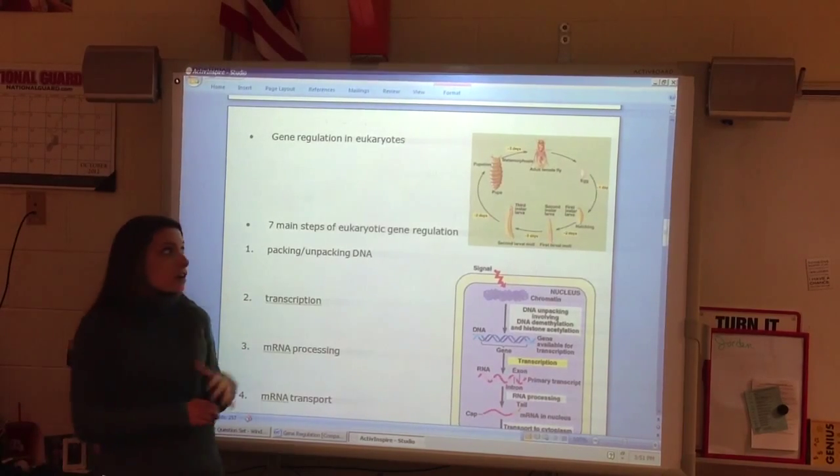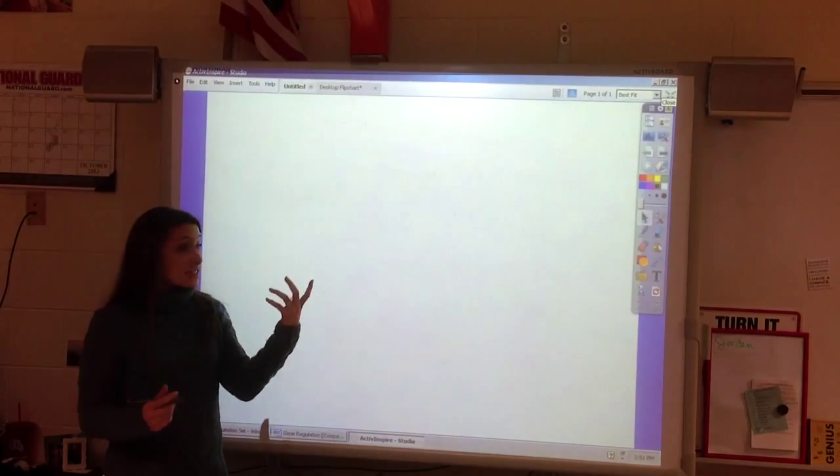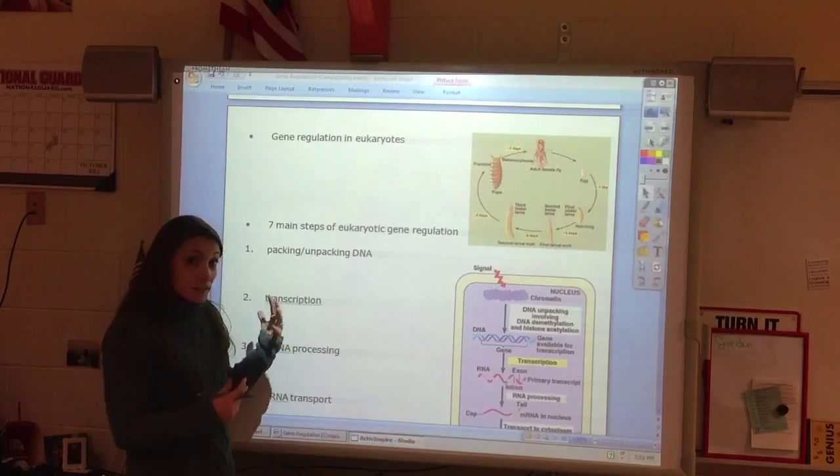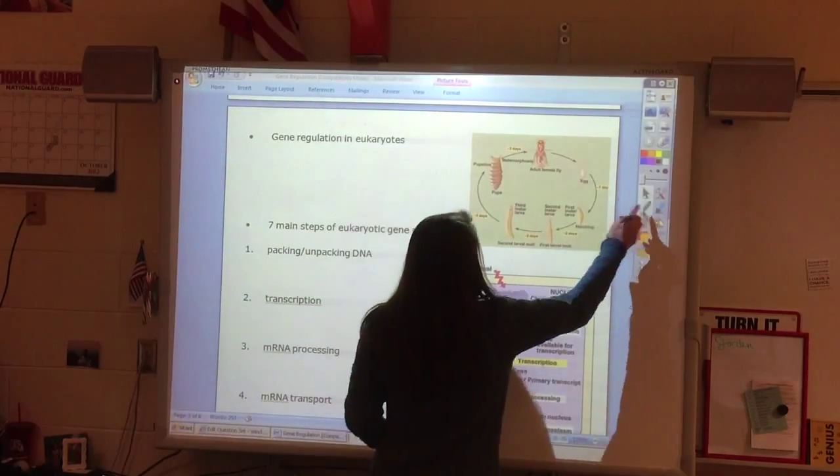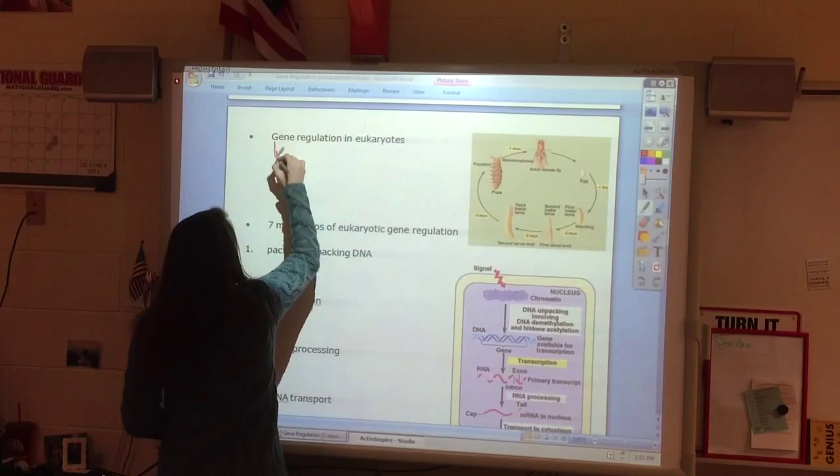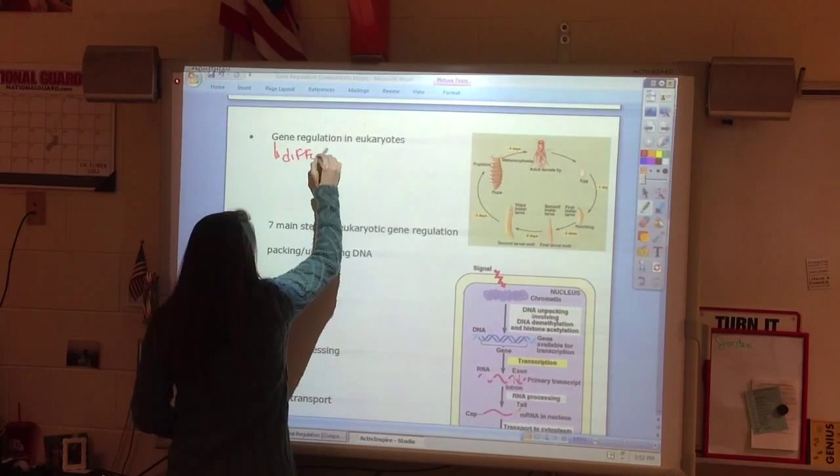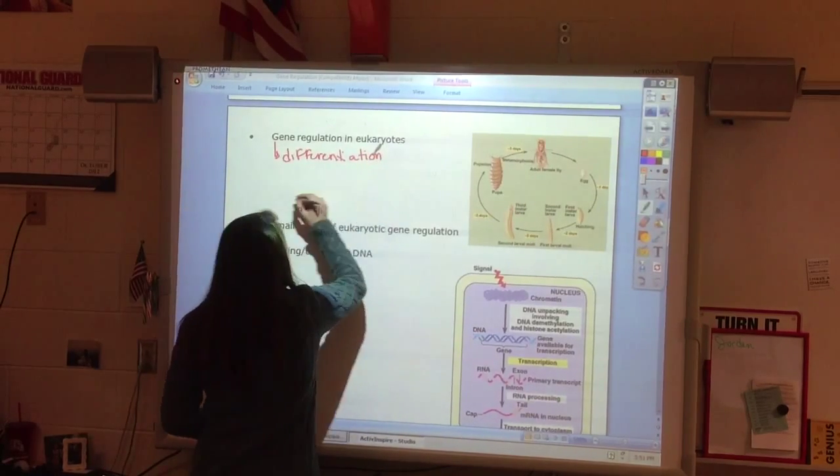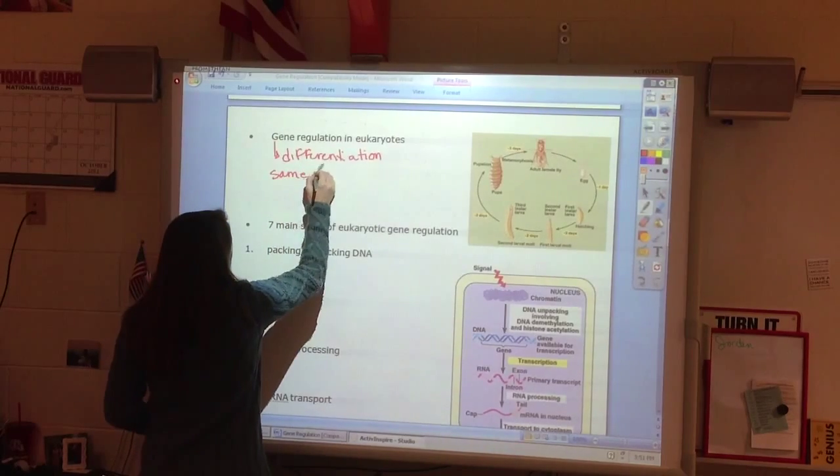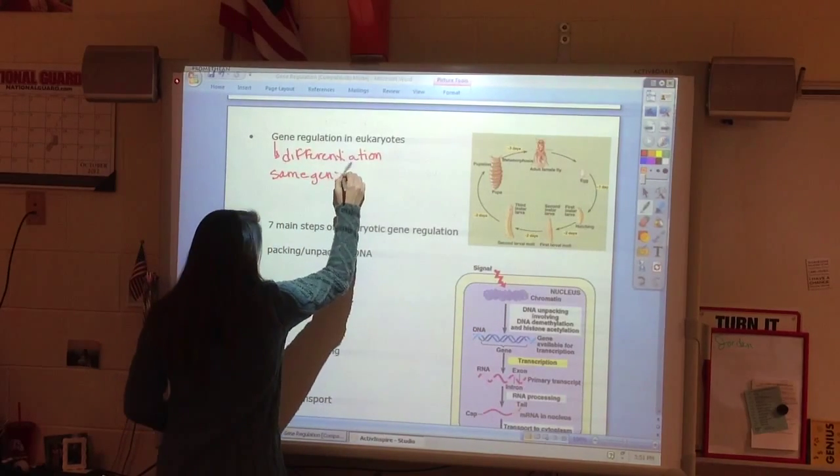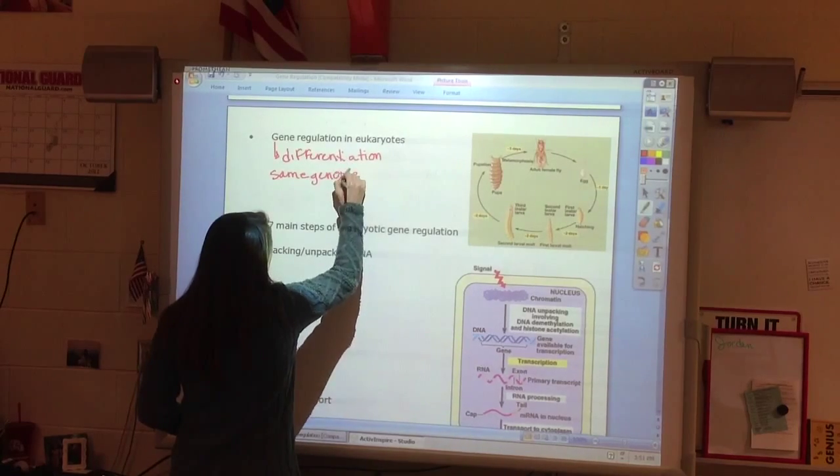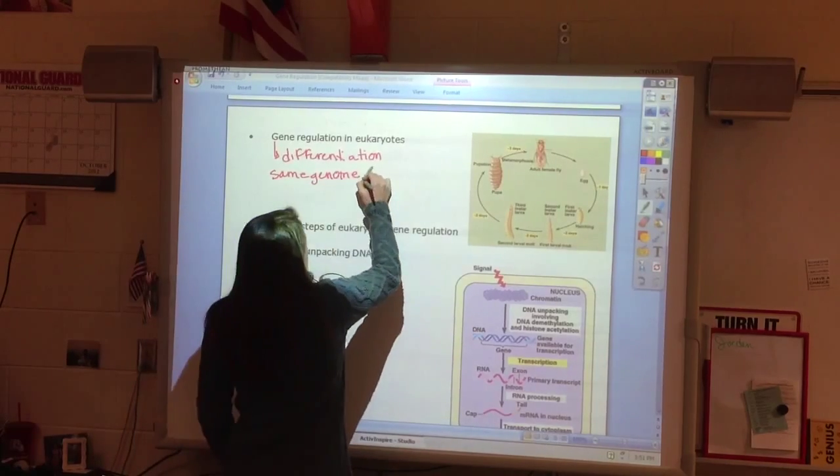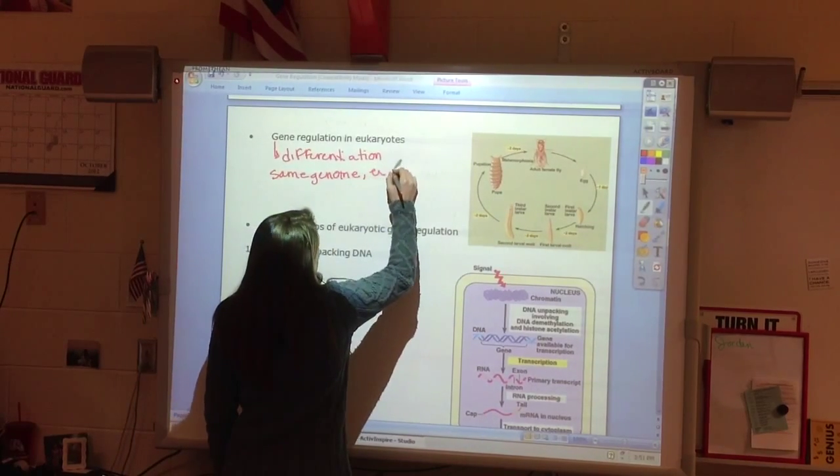In a prokaryotic organism, you have one cell, and that cell is all you have. In a eukaryote, you're often multicellular. So gene regulation allows for differentiation. Every cell in the organism has the same genome, the same set of genes, and we call that a genome. So every cell has the same genome, but it's going to be expressed differently.